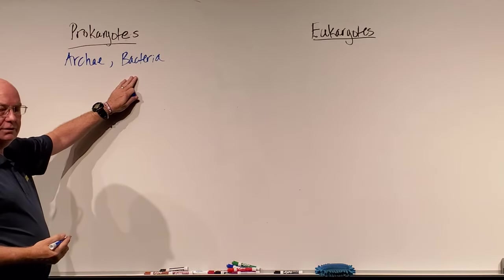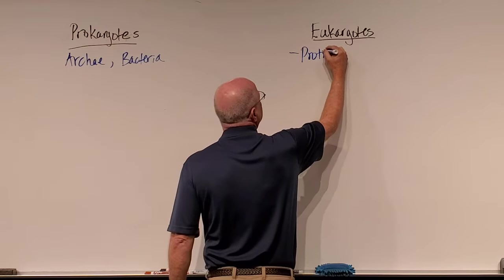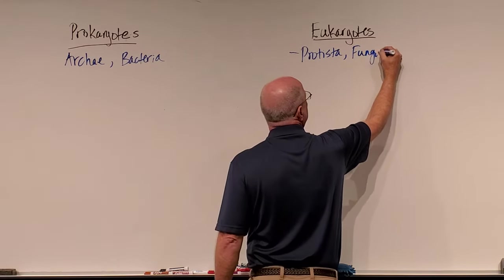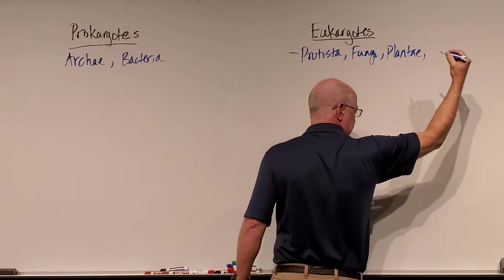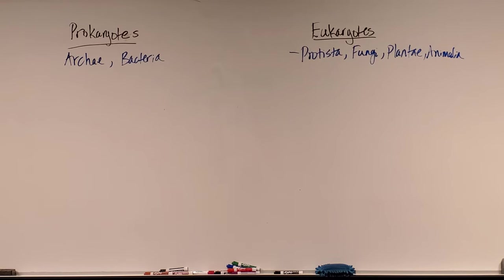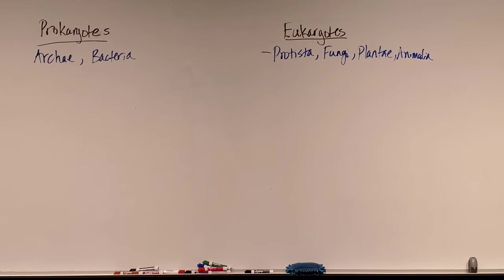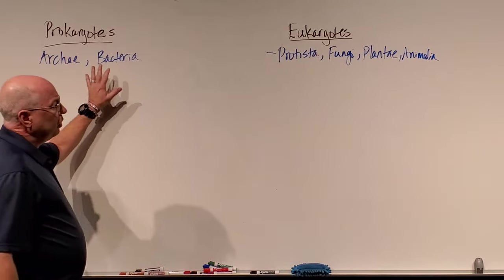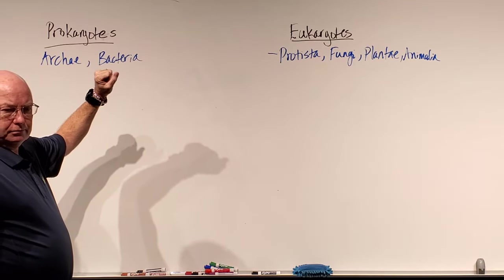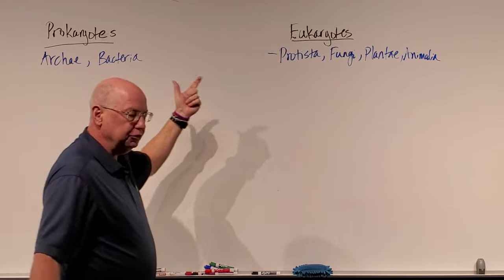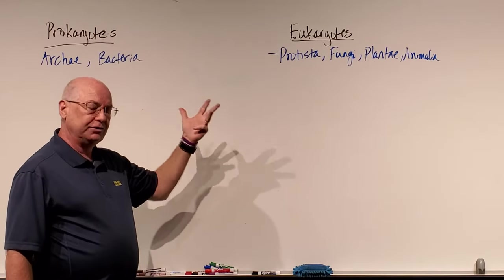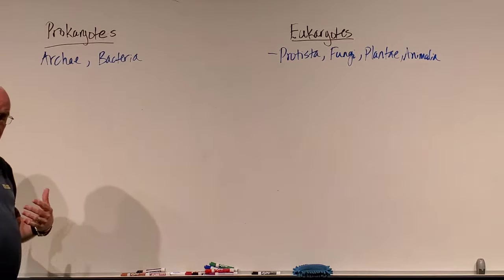All Archaea and all bacteria are prokaryotes. Under eukaryotes, this includes Protista — remember Protista are single-celled organisms. Then there is fungi, Plantae, and Animalia. So all protists, all fungi, all plants, and all animals are eukaryotic cells. All bacteria and Archaea are prokaryotic cells.